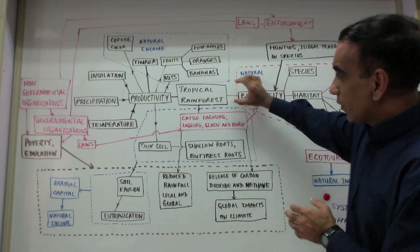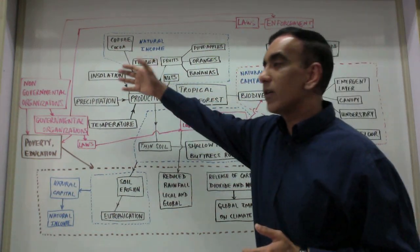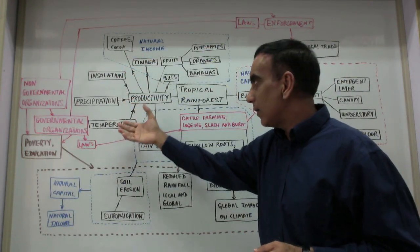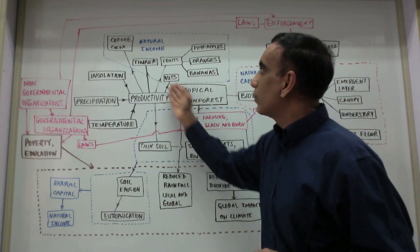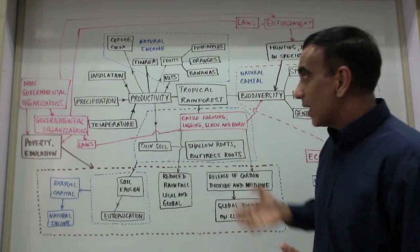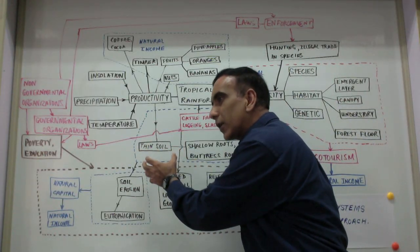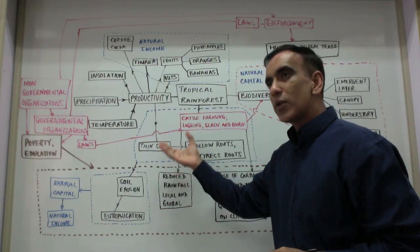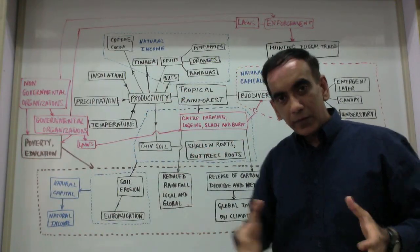The rainforest, because it is exposed to certain abiotic factors like high levels of insolation, precipitation, and the appropriate temperature, has a very high level of productivity. From this high productivity, the result is a very thin soil because organic materials are very quickly depleted from the soil and taken up and stored in the biota of the rainforest, in the living components and large trees.